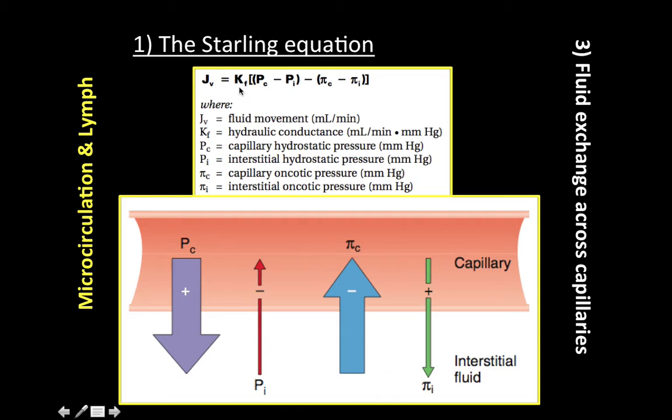Next we have KF, which is the filtration coefficient — also called the hydraulic conductance — representing the water permeability of the capillary wall. It is a constant.